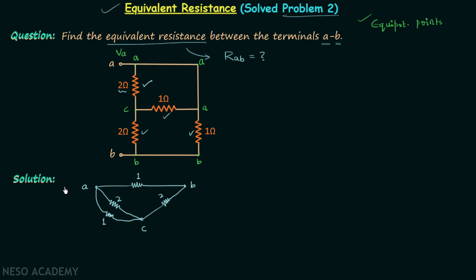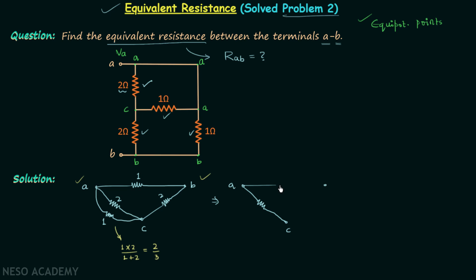Now we are comfortable calculating the equivalent resistance between terminals A and B. Between A and C we have two resistors in parallel, giving a single resistor of value (1 × 2) / (1 + 2) = 2/3 ohms. In the next step we have: between A and C a resistor of 2/3 ohms, between A and B a resistor of 1 ohm, and between B and C a resistor of 2 ohms.